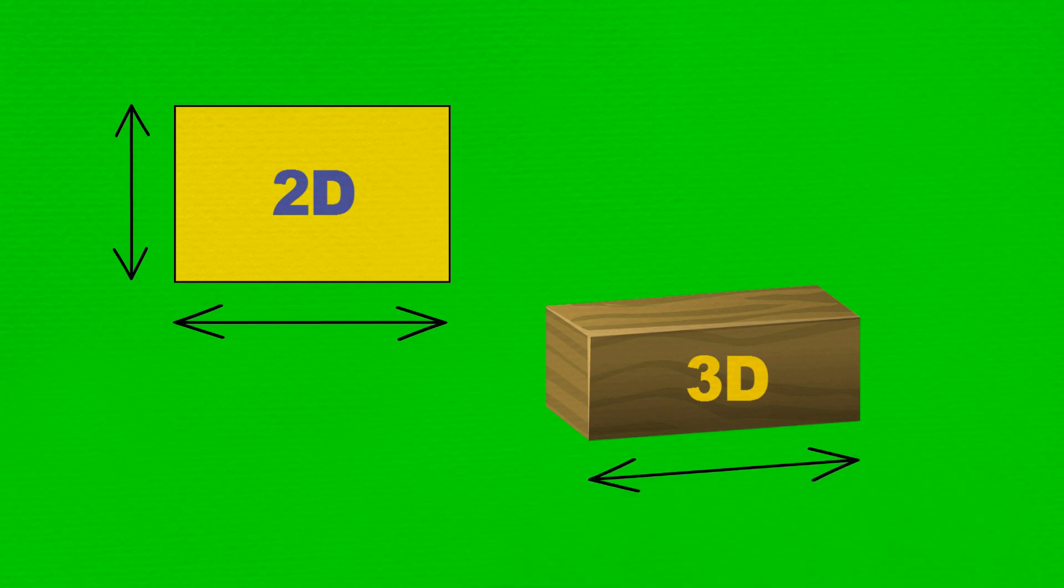In video 2.6.6, we discovered that flat, two-dimensional shapes or surfaces are measured using two dimensions or directions, and that solid, three-dimensional objects also have thickness or depth, so they are measured using three dimensions or directions.